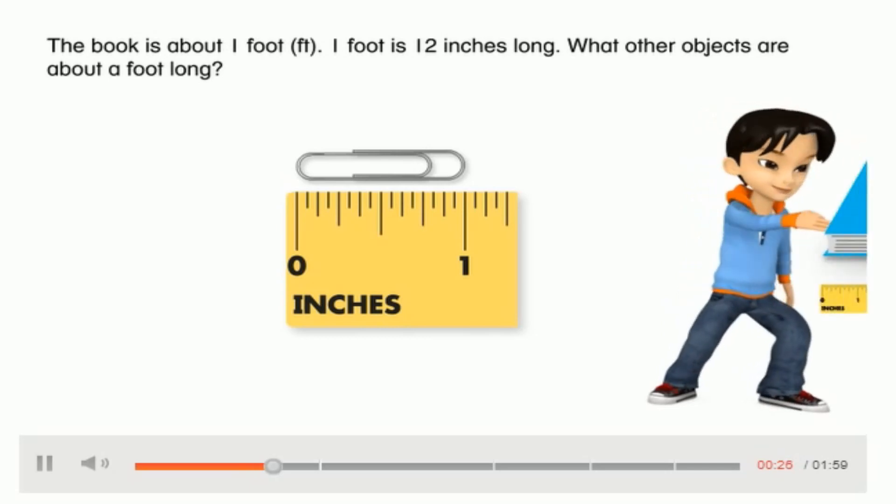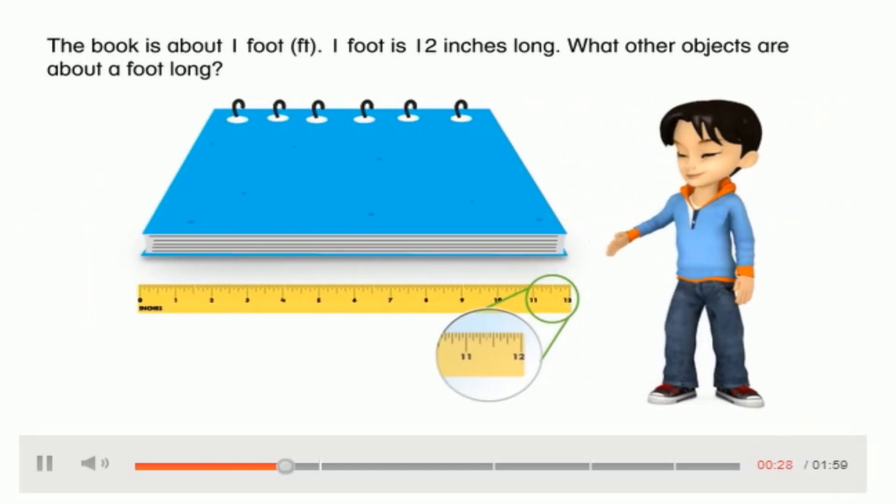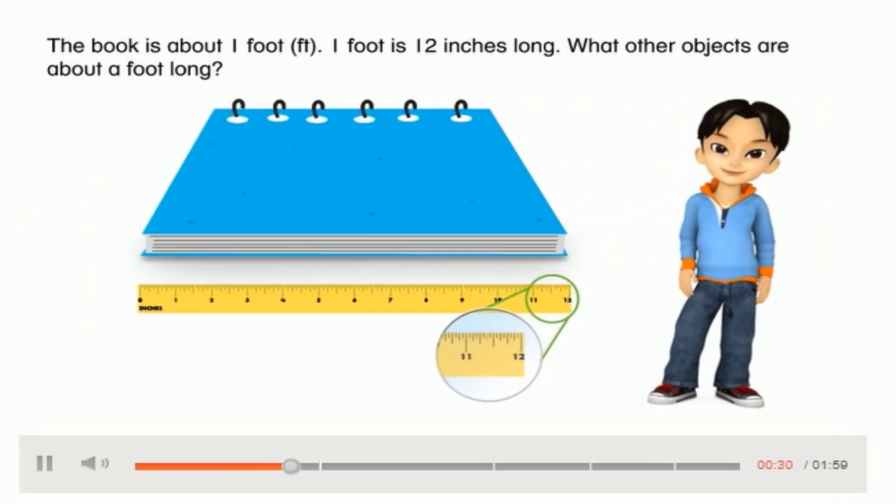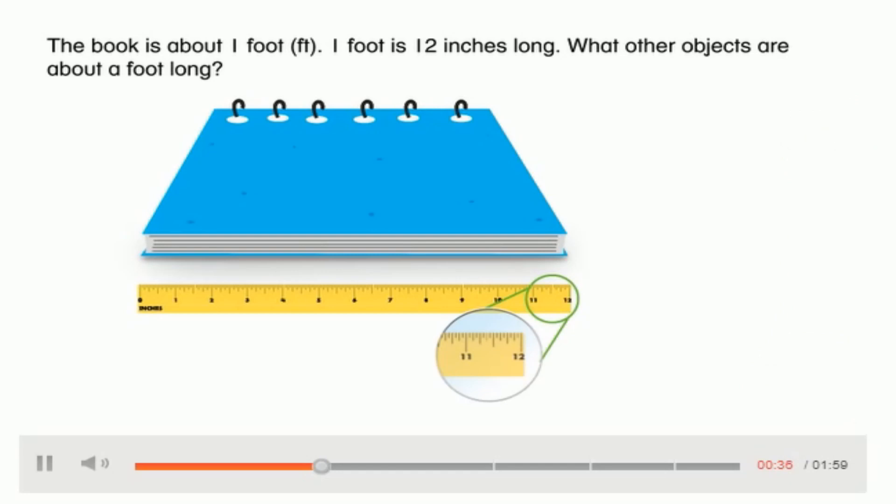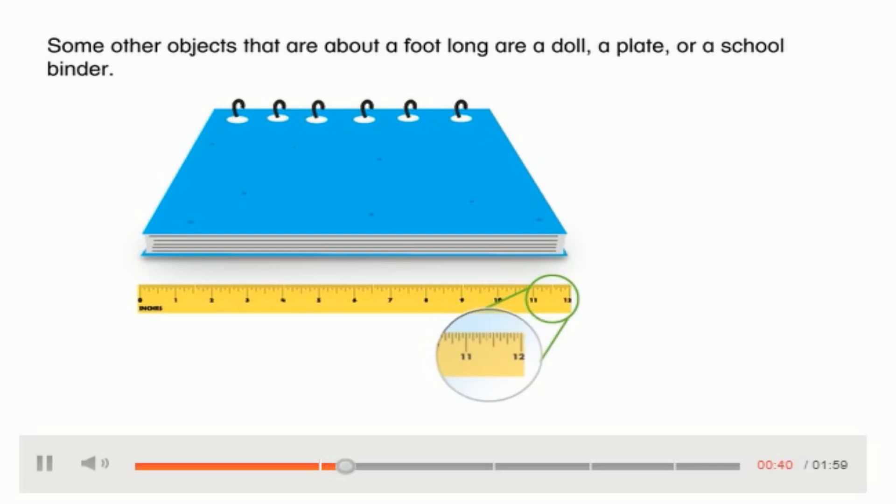The length of the paper clip is about one inch. The book is about one foot. One foot is 12 inches long. What other objects are about a foot long? So what other objects are about a foot long? Just think. Look around yourself. Some other objects that are about a foot long are a doll, a plate, or a school binder.